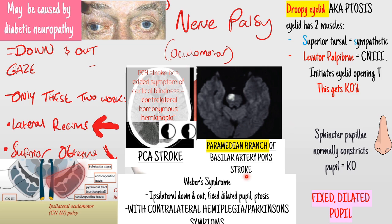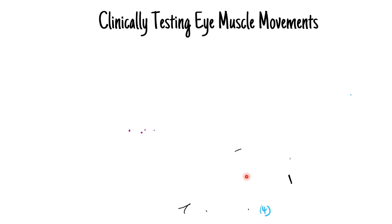That's everything about third nerve palsy. Now we're going to talk about clinically testing eye muscle movements - this is when you're asking a patient to follow your finger and isolating specific muscles.